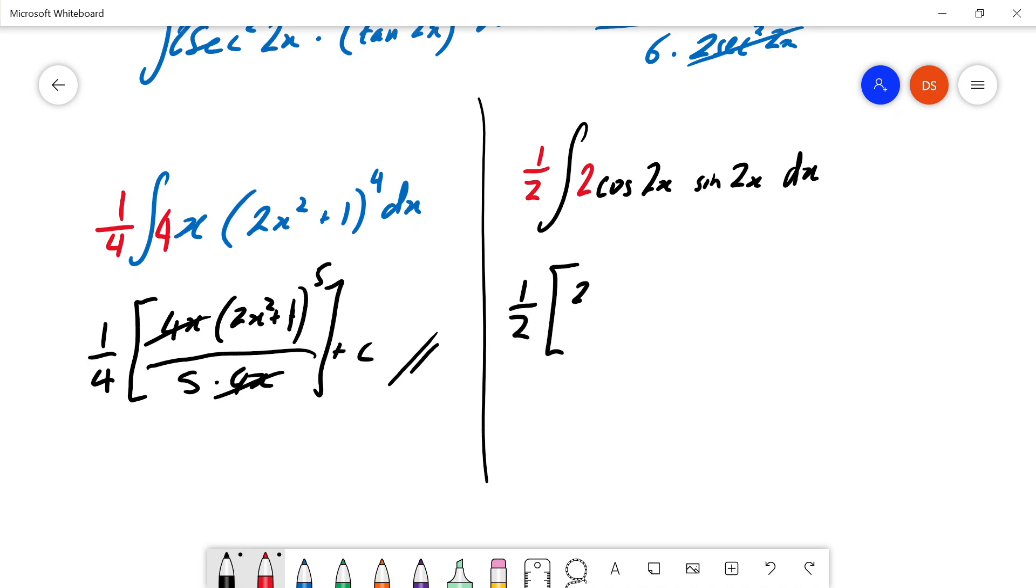And so when we integrate you write 2 cosine 2x times sine add 1 to the power divide by the new power divide by the derivative of the inside cancel cancel plus C.